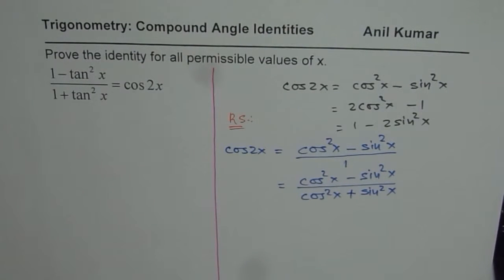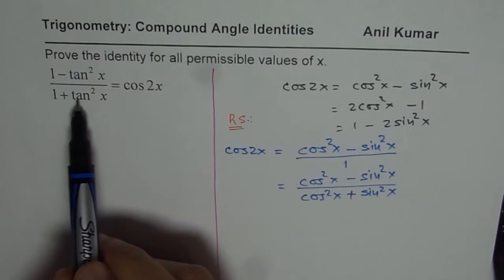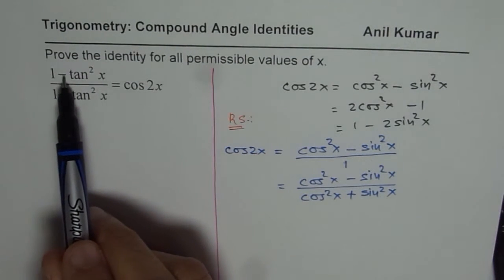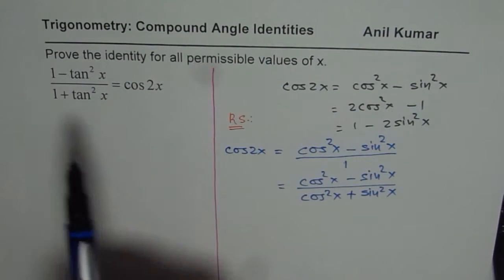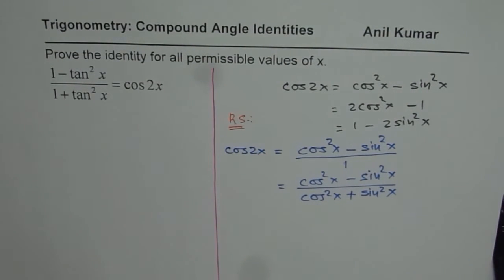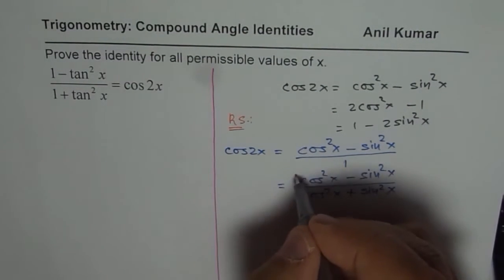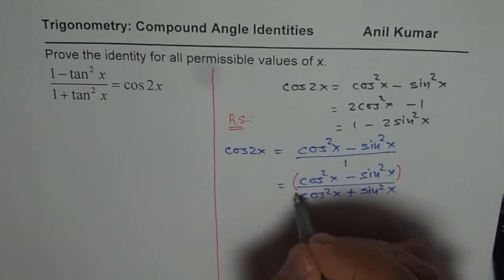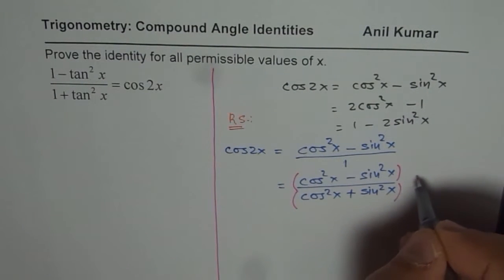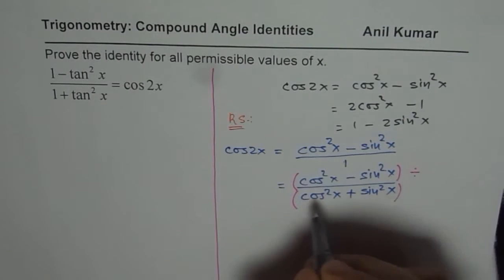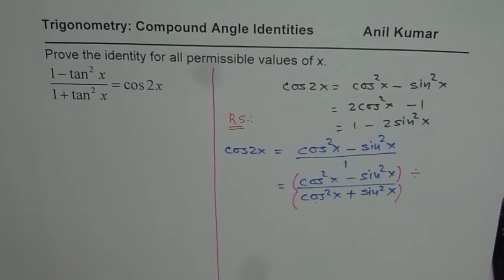So that is how you could write 1. Now since you need 1 plus tan square x here, and 1 minus tan square x in the numerator, it is a good idea to divide both numerator and denominator by cos square x. Or you can factor cos square x, either way.